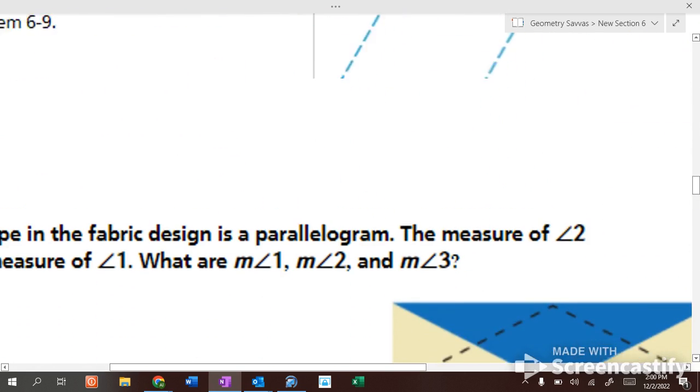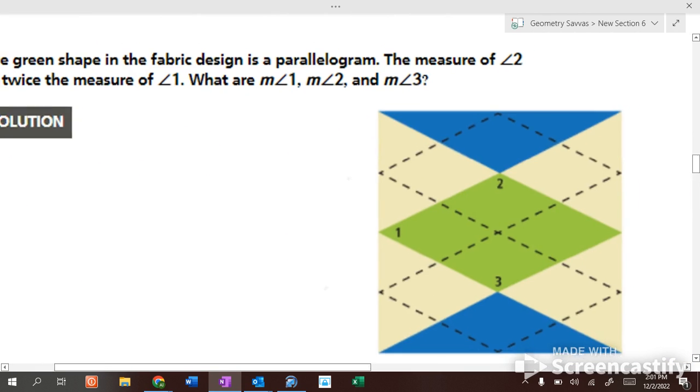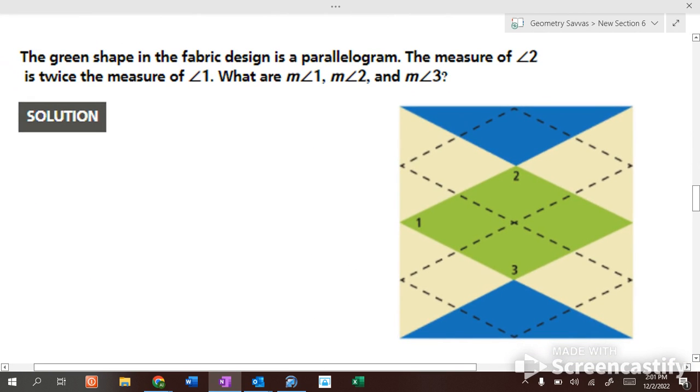Okay, this one talks about the opposite angles being congruent. So, this one says angle 2 is twice the measure of angle 1. We want to know what angles 1, 2, and 3 are. So, angle 2 is twice the measure of angle 1. Angle 2 talks about itself in terms of angle 1. So angle 1 gets its own variable. Angle 1 is x. So how big would angle 2 be if it's twice as big? 2x.